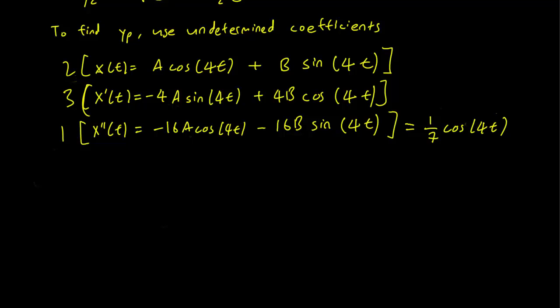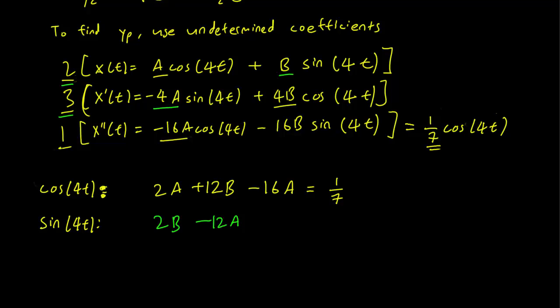So let's collect the cosine and the sine terms. And the cosine terms are 2 times A, 3 times 4B, and -16A. And we have also a 1/7 on the right hand side. Our sine terms are going to be 2 times B, 3 times -4A, and 1 times -16B. There's no sine on the right hand side, so that's just going to be equal to 0.